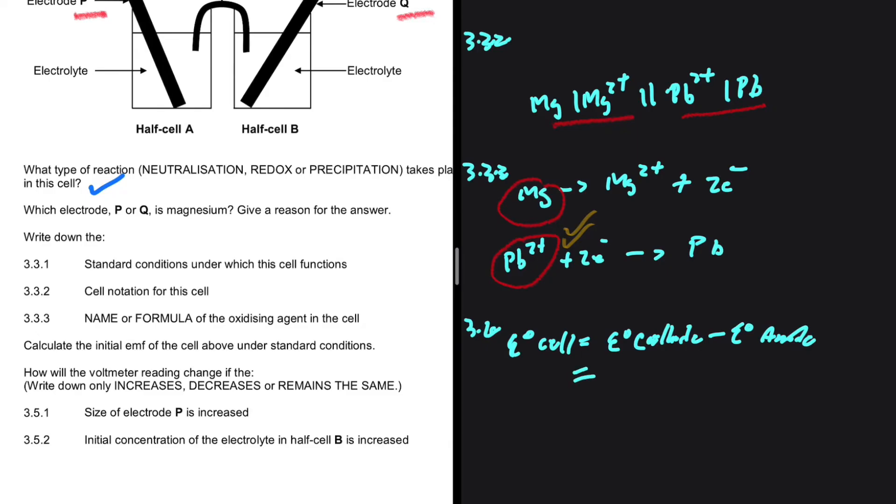At the cathode, we have lead and lead has a standard reduction potential of minus 0.13 minus the standard reduction potential at the anode.